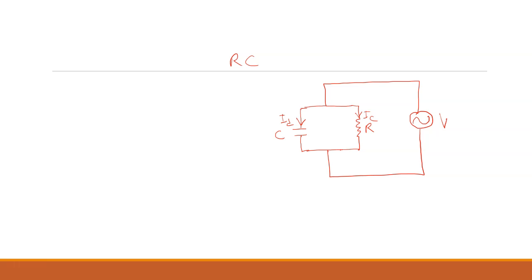Now, the current through the resistor R is IC, and by Ohm's law it is given by IC equals V by R, because IC is known as conduction current. The current passing through the conductor or the resistor — like in our homes there are aluminum and copper wires — the current passing through them is known as the conduction current, due to the conduction electrons.